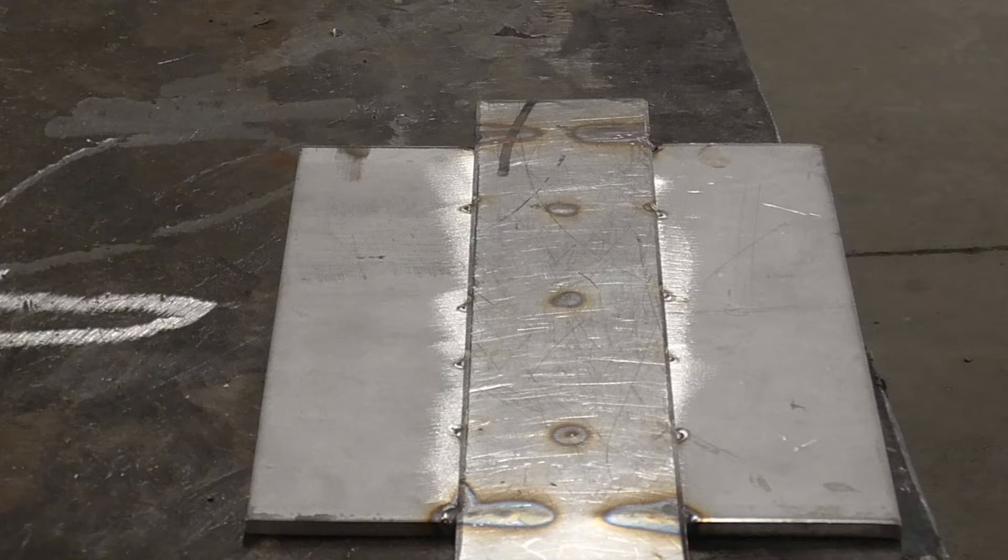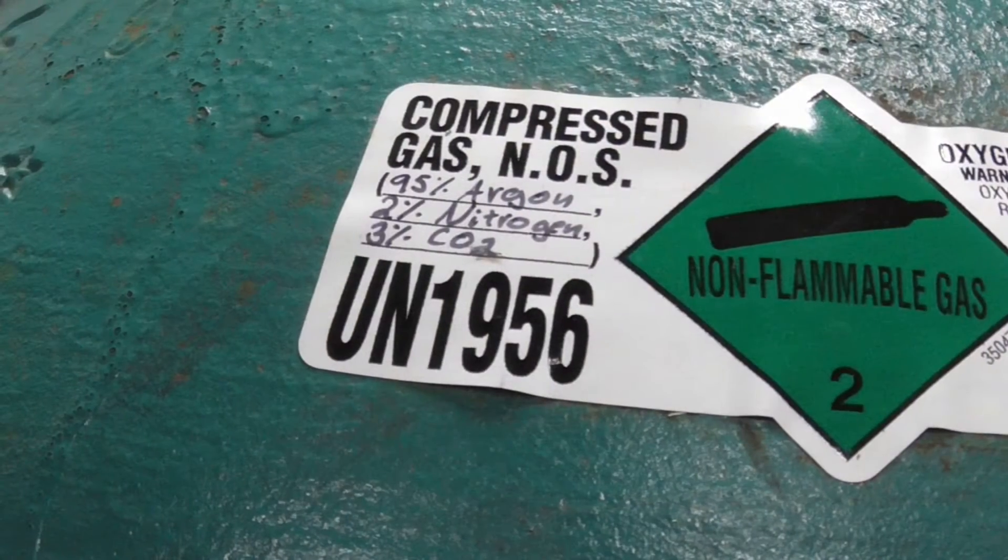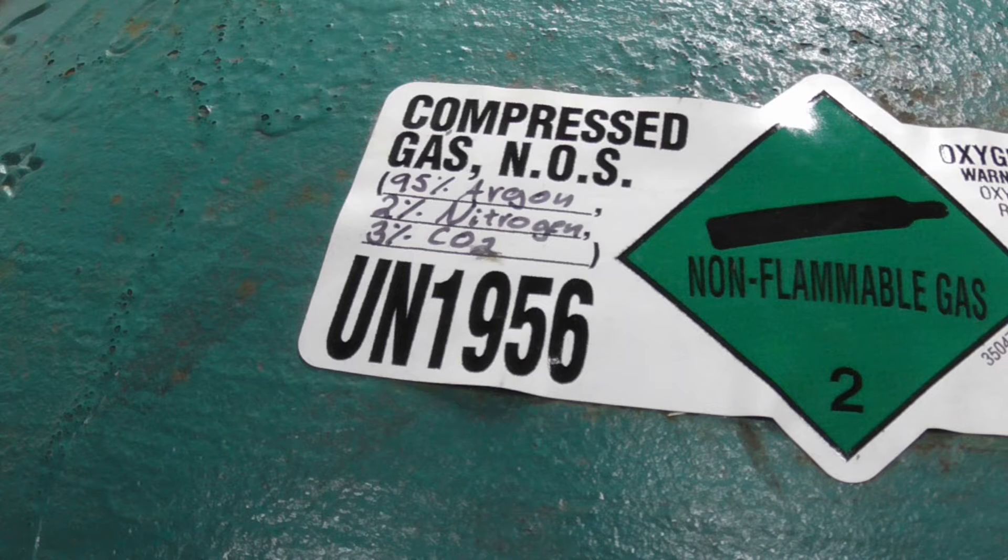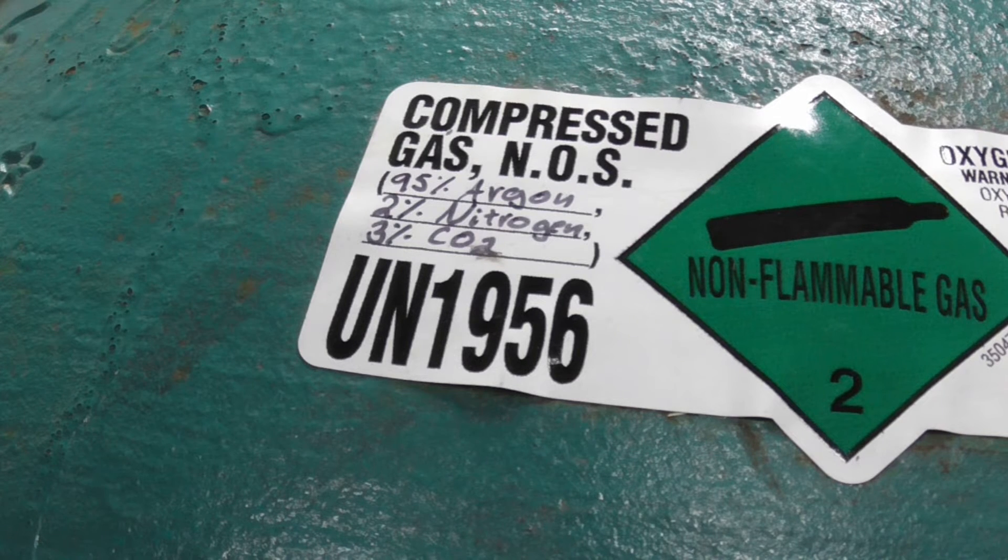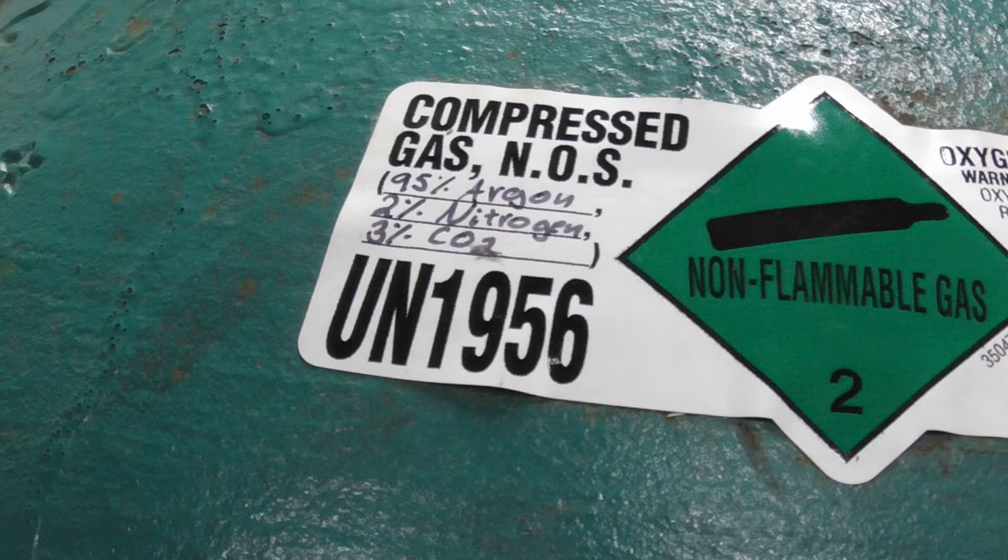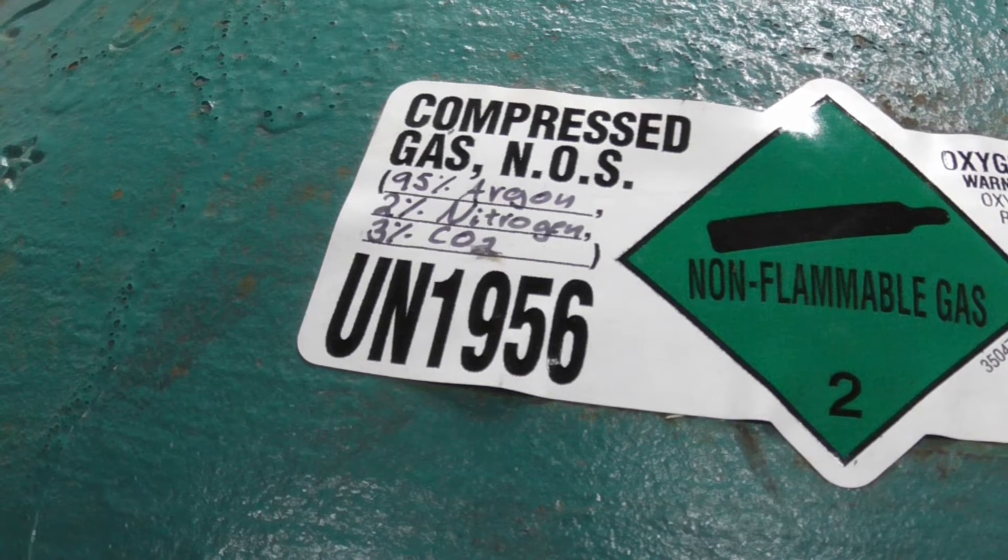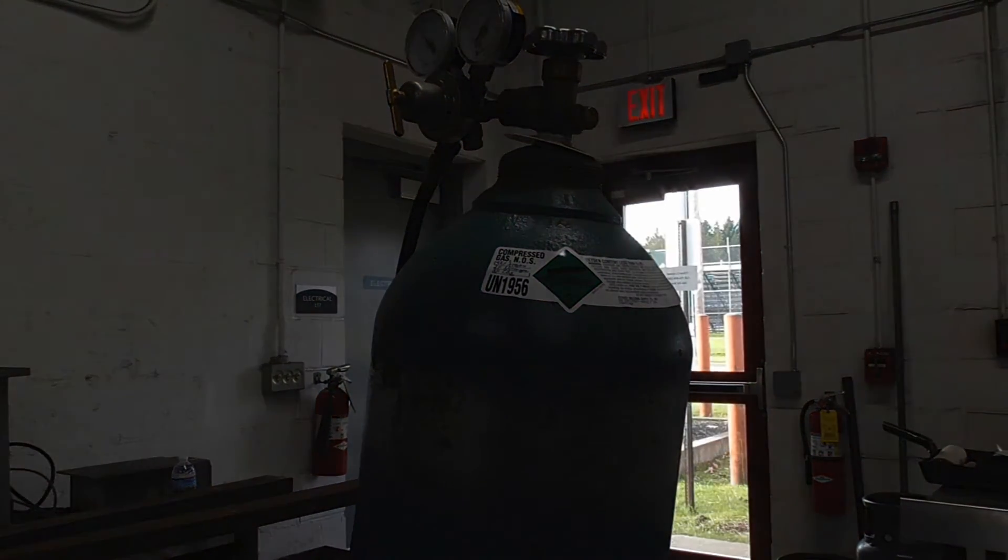You can see here is the composition of the gases: 95% argon, 2% nitrogen, and 3% CO2. I've never welded with this combination of gases, which is why we're doing this. Let's take a look at the flow meter and see what we have for cubic feet per hour.